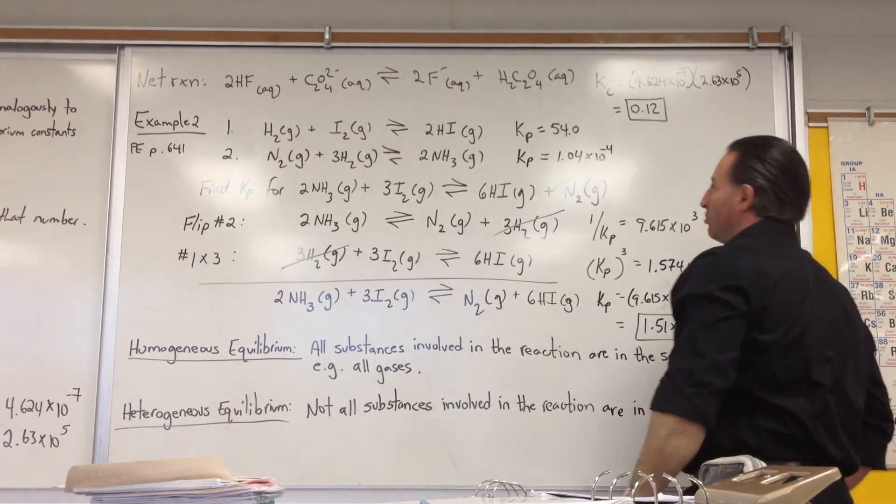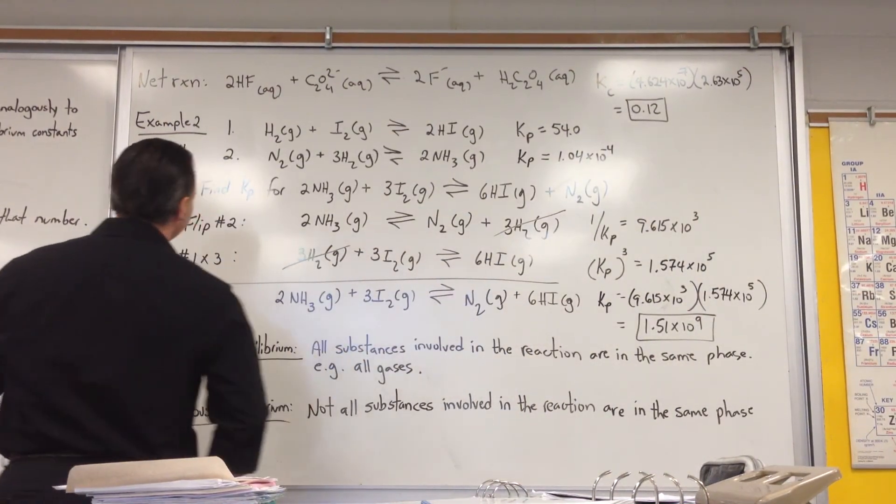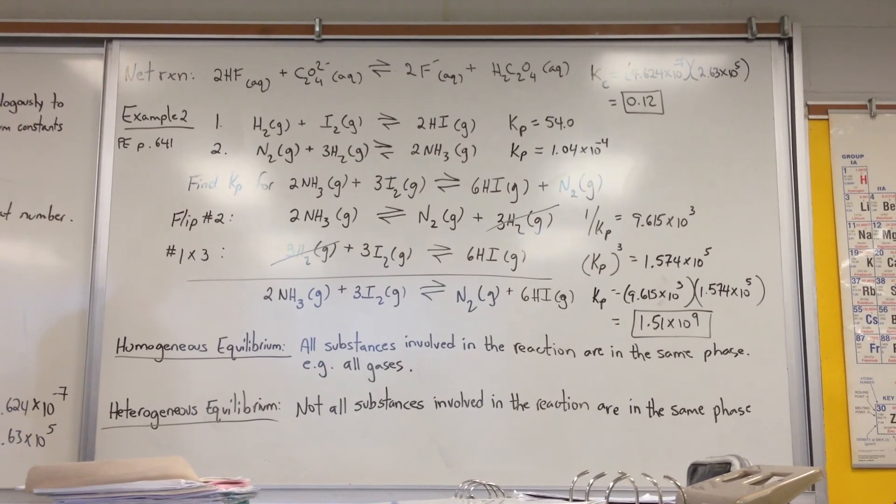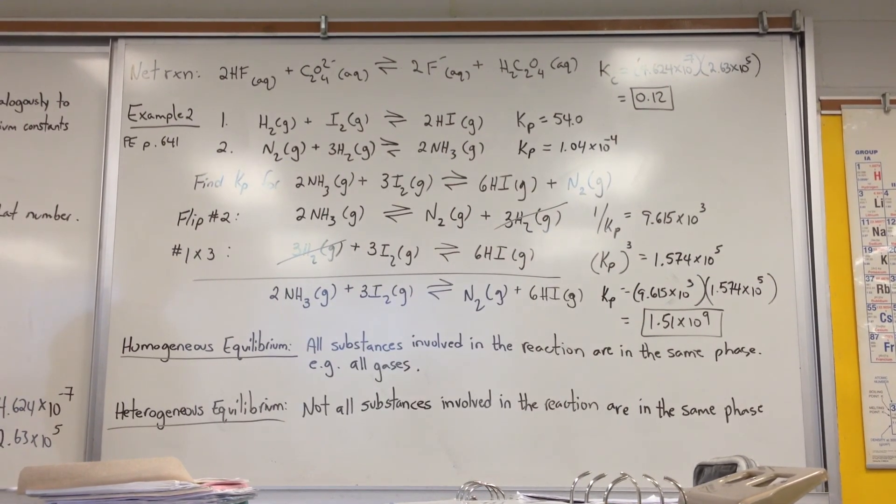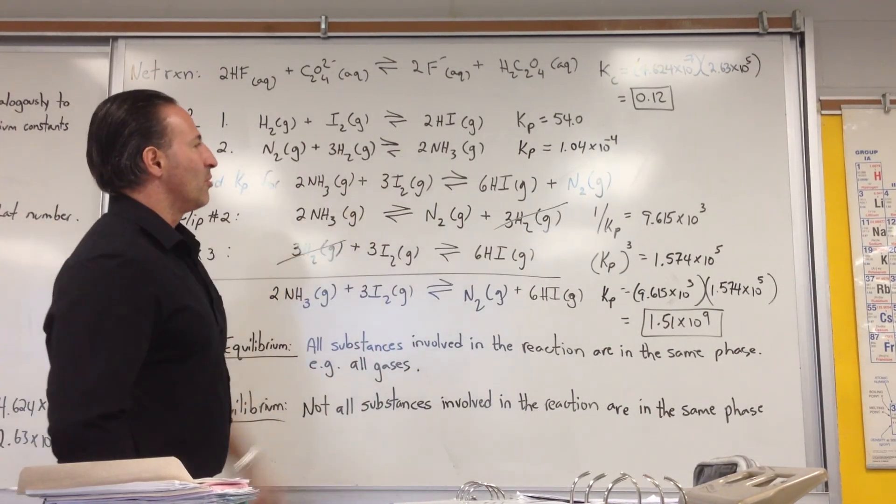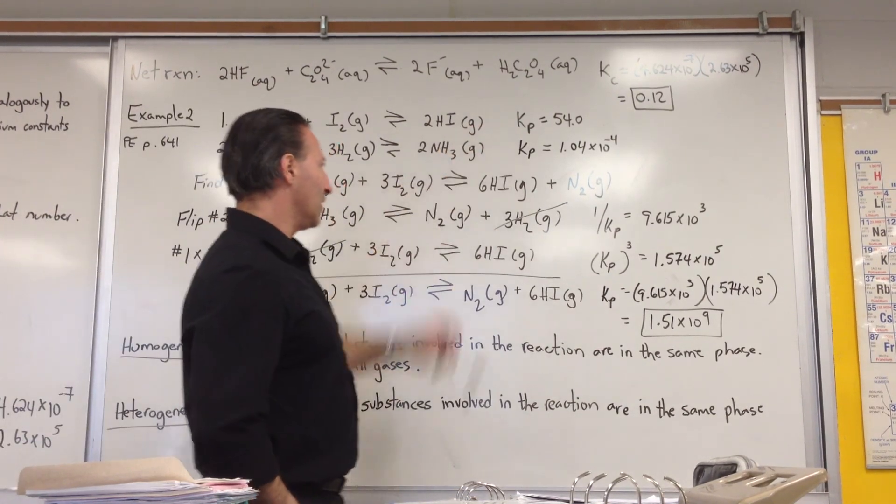In the second example, a reaction between hydrogen and gaseous iodine forms hydriodic acid, and the reaction of nitrogen gas and hydrogen gas can form ammonia. And the two equilibrium constants for those reactions are given here.